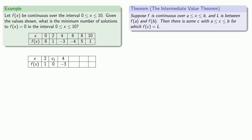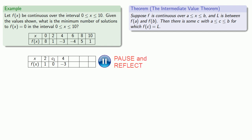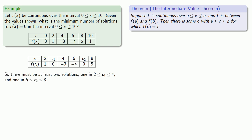By a similar argument, we see that there's at least one other place where we might have a solution. At x equals 6 we're too small, while at x equals 8 we're too big, so some place in between we're just right. There is a solution between 6 and 8. So there are at least two solutions: one in the interval between 2 and 4, and one in the interval between 6 and 8.